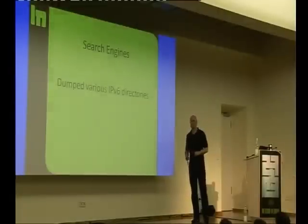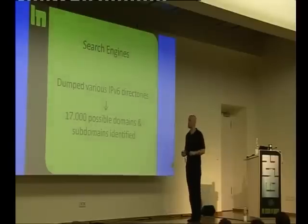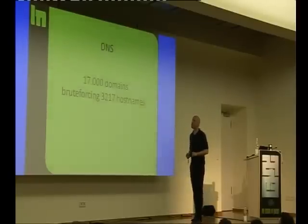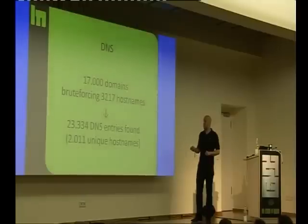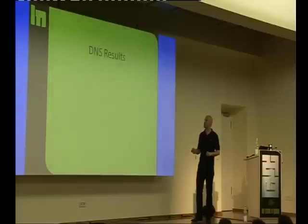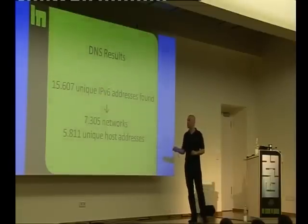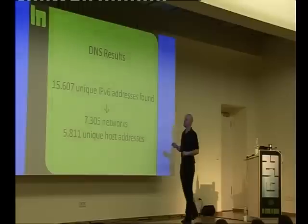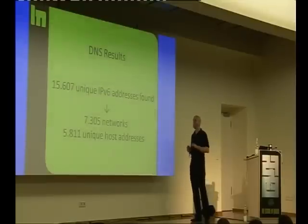I dumped various IPv6 directories — there are quite a few of them — and got 17,000 possible domains and subdomains identified just from dumping all the database and search engine data. Then I did DNS enumeration: for all 17,000 domains I brute-forced over 3,000 hostnames. Found lots of systems, and from those I found 15,000 unique IPv6 addresses in 7,000 networks — which is actually not that many.